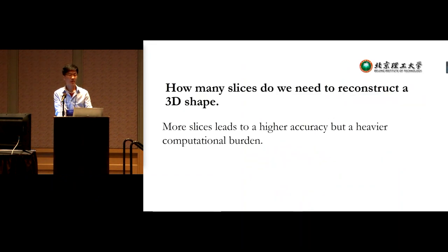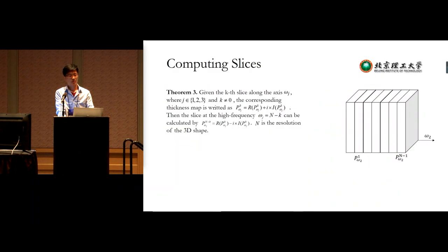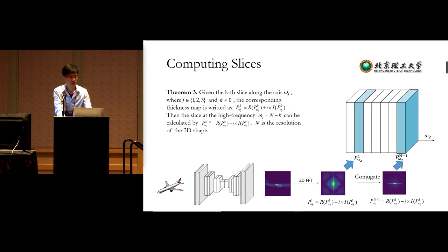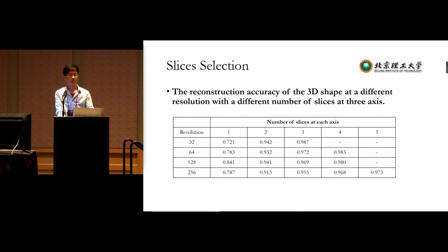How many slices do we need? More slices improve accuracy but increase computational cost. We introduce a theorem showing that the thickness map at high frequency and the corresponding low frequency are conjugate, so we only predict the low-frequency thickness map and get the high-frequency map for free. Testing at different resolutions, predicting three slices along each axis is sufficient for accurate reconstruction.